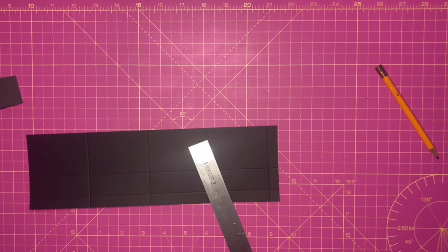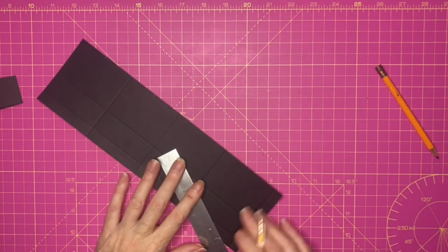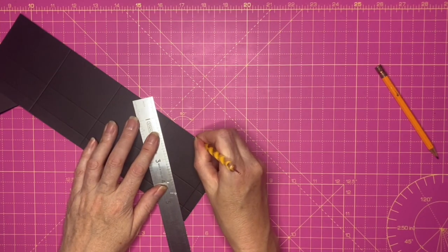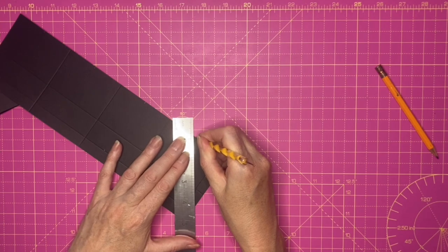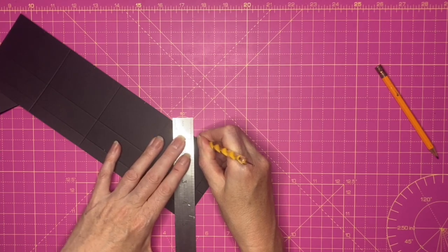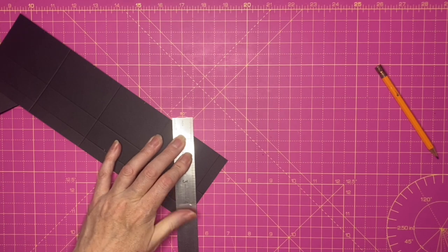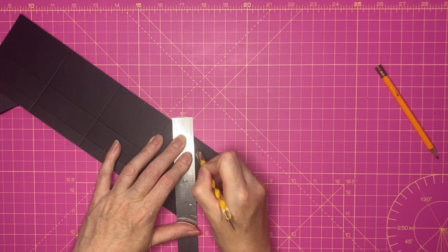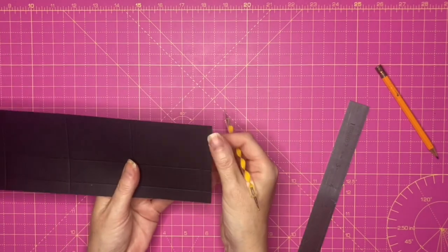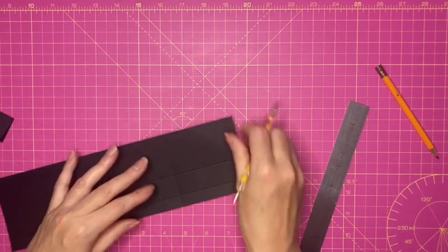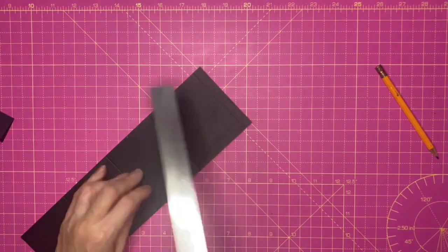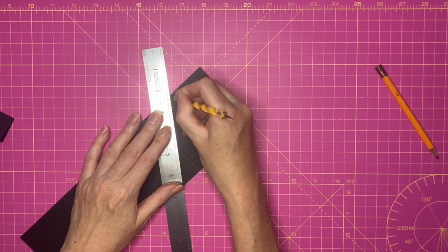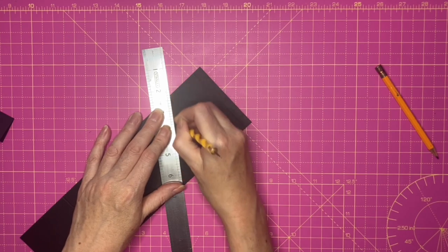I'm now going to use my metal ruler and a stylus and I'm going to score by placing my stylus on my pencil mark and my ruler up against it, and I'm going to score up to the first score line, like so. I'm going to go all the way along, repeating the scoring and it's going to create a triangle in each of the four panels.